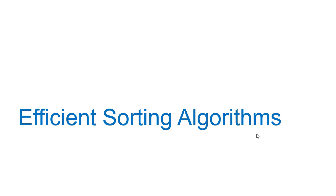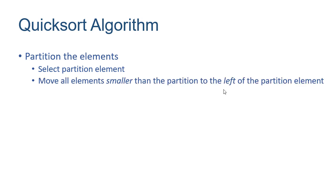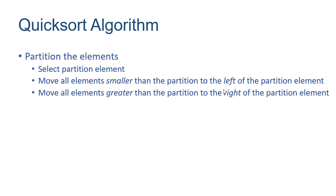In this video, we're going to look at another efficient sorting algorithm — quicksort. Before we get into the implementation, we want to talk about the algorithm at a high level. The first thing we want to do is partition the elements in the array. We select a partition element, move all elements smaller than it to the left, and all elements greater to the right. Then we recursively sort those two partitions.